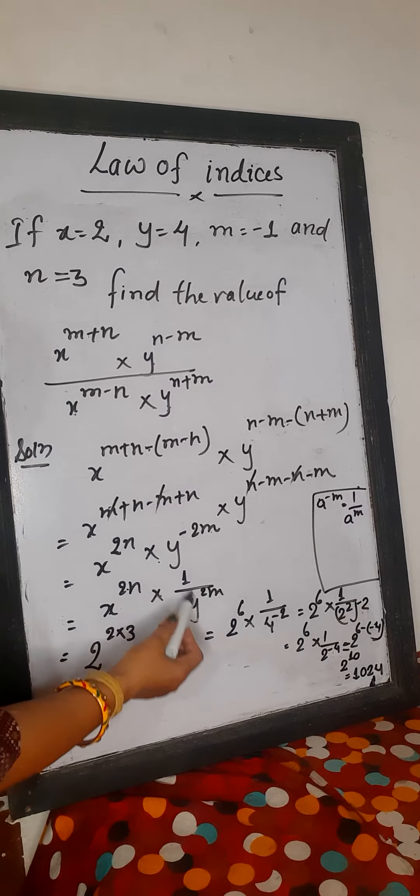Equal to 2 to the power 6 into 4 to the power minus 2, which equals 2 to the power 6 into 1 by 2 to the power 4. Then we subtract: 2 to the power 6 minus 4 gives 2 to the power 2, and the final answer is 1 over 2 to the power 10, which equals 1 over 1024.